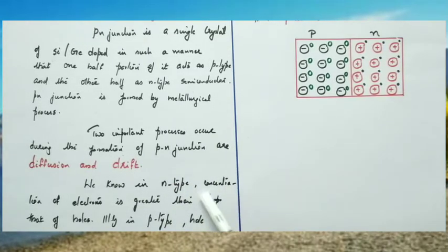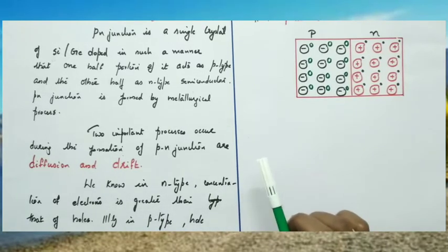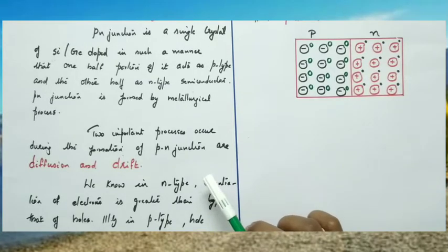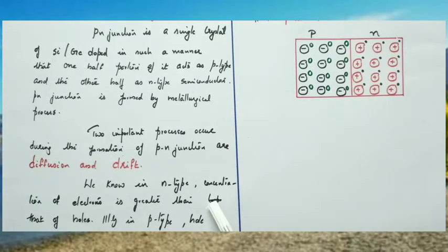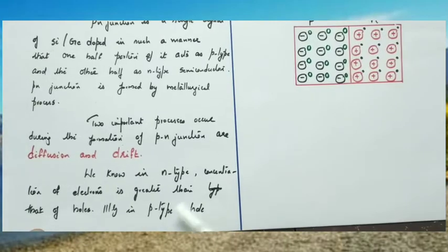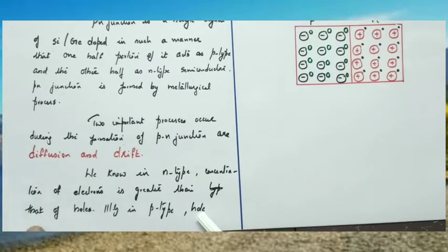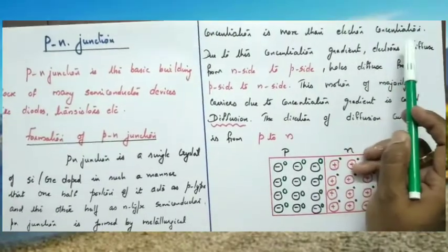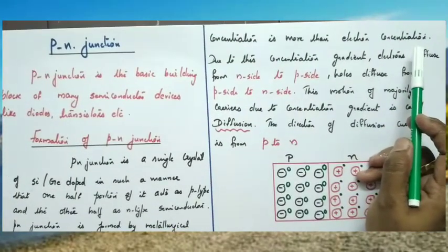In an N type semiconductor, the concentration of electrons is greater than holes, because in an N type semiconductor majority carriers are electrons. Similarly, in a P type semiconductor, holes are the majority carriers. Therefore, hole concentration is more than electron concentration.